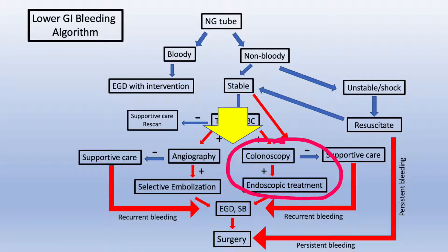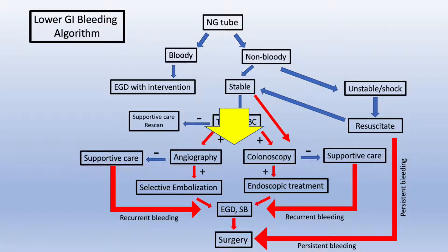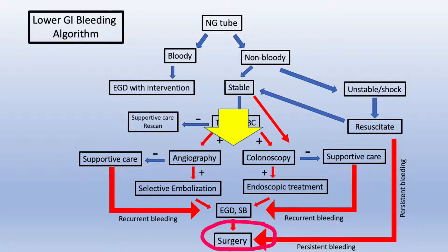However, if bleeding persists after successful embolization or endoscopic treatment has been performed, an EGD and small bowel investigation should follow. And lastly, if conservative management fails, surgery should be performed. Failure is signified by persistent bleeding despite interventions, lack of identification of the bleeding source, or continued re-bleeding.